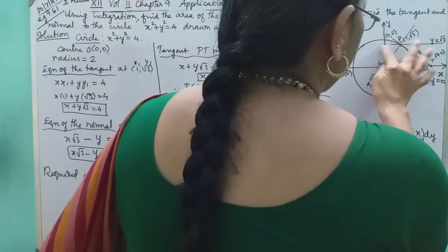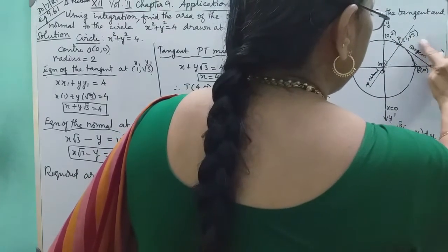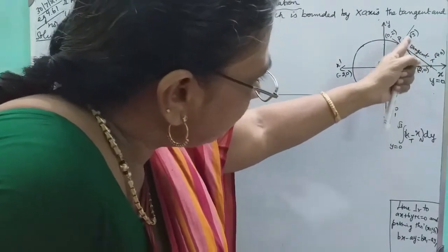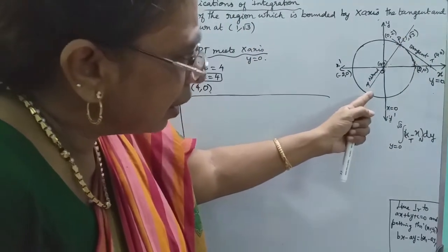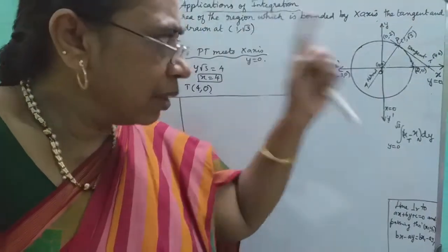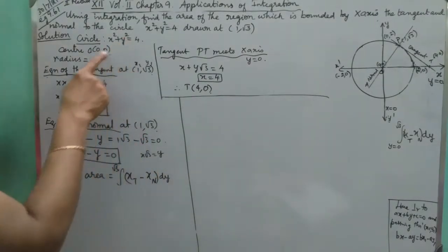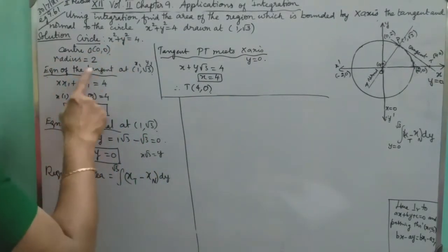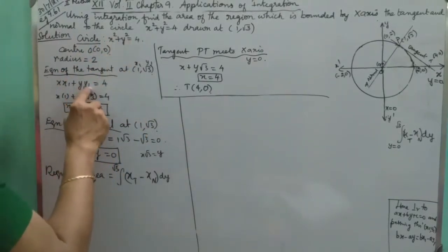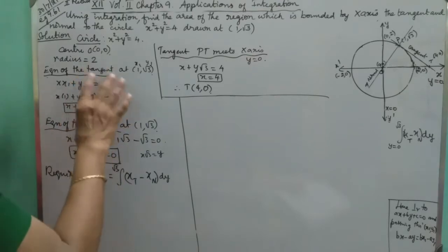We are working on the region. Now, (1, √3) is the point on the circle — that gives us the tangent and normal. All circles pass through the normal. The equation gives us the center and the radius. The equation of the tangent at (1, √3) is derived from the formula. This is the tangent equation.